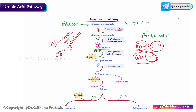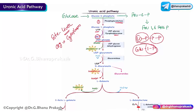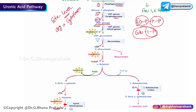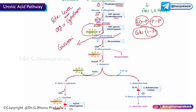The next very important step: UDP-glucose gets converted to UDP-glucuronate. In this process, NAD+ is converted to NADH. The enzyme is UDP-glucose dehydrogenase. The product, UDP-glucuronate, is critical — it is diverted into the synthesis of glucuronates, as well as glycosaminoglycans (GAGs) and proteoglycans.